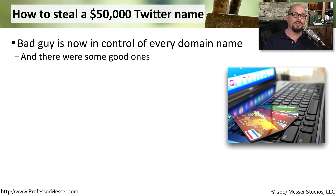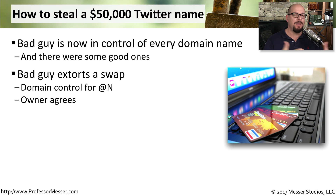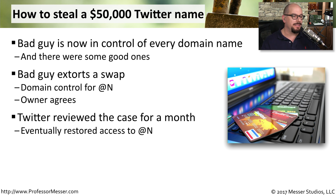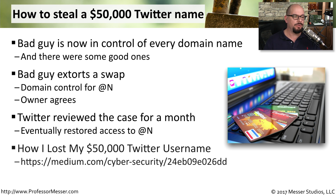At that point, the bad guy owned all of Hiroshima's domains, had access and control over everything, and then told him: 'How about we swap? I'll give you access to your domains again — all you have to do is give me the @N username.' There was nothing else Hiroshima could do, so he agreed. He then went to Twitter to report that this had been taken from him illegally. It took about a month, but eventually Twitter gave him access again to his @N username. You can read all about it in his Medium.com post titled 'How I Lost My $50,000 Twitter Username.' This is social engineering that involved multiple organizations, but the bad guy got exactly what he wanted just by using social engineering techniques.